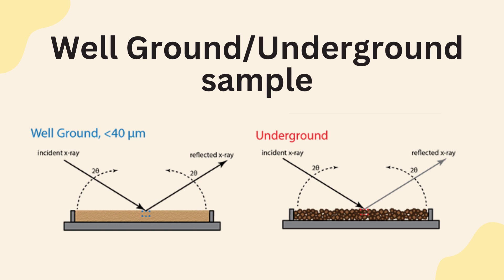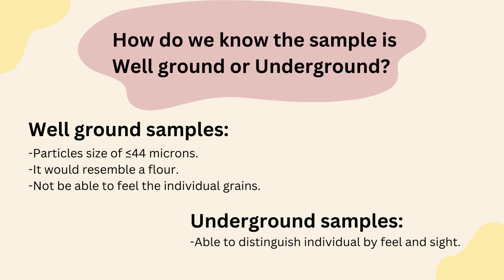This is an example of a well ground and underground sample. How do we know the samples are well ground or underground? For well ground samples, it has a particle size of at most 44 microns. Besides, it would resemble a flour such that when we rub the sample between fingers, we would not be able to feel the individual grains. On the other hand, for underground samples, we would be able to distinguish individual grains not only by feel but by sight as well.